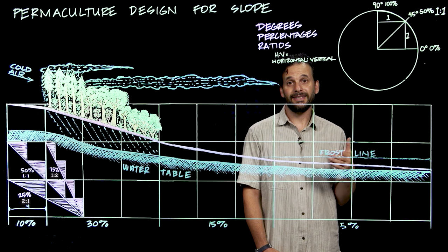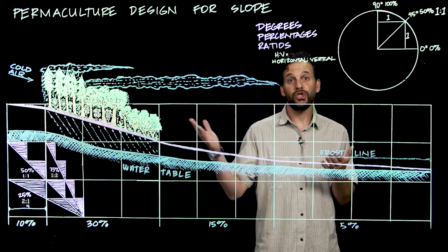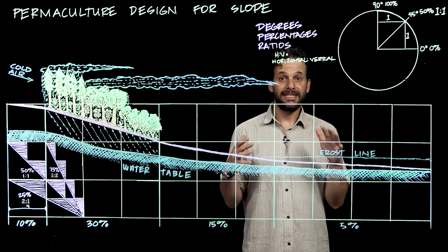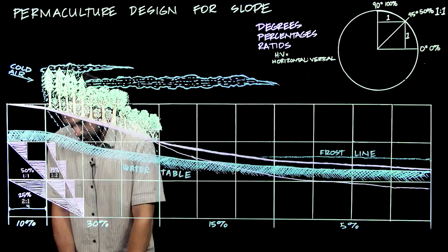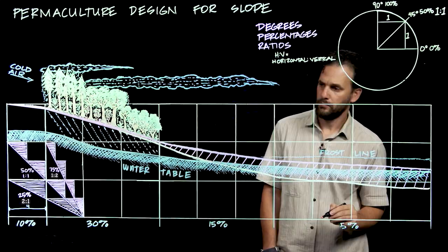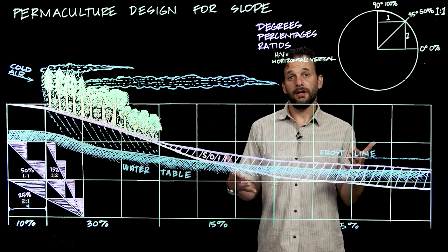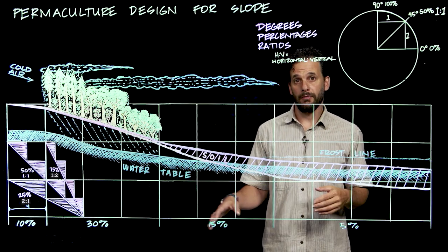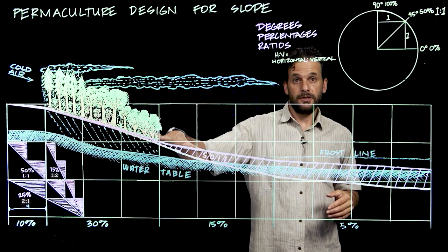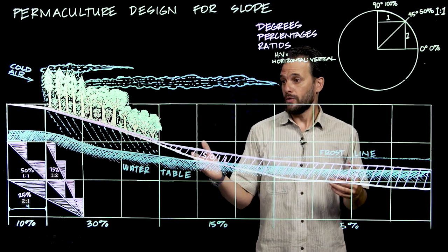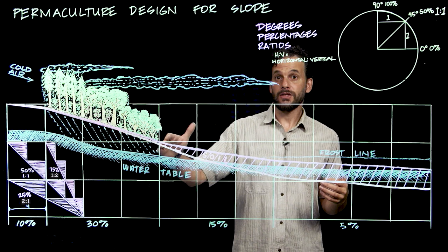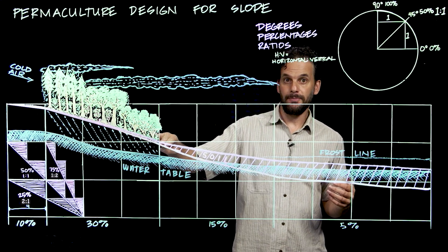Another thing to note at this time is that soils are shallow on the slopes and get deeper as we descend down into the valley. This is because soils weather over time and drift down to deposit at the bottom of the system. You can see how this point right here, where the slope breaks, is where soils start to deepen.